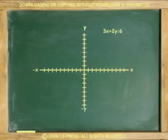One more example, graph the inequality 3x plus 2y is less than or equal to 6. Because the inequality is not in slope-intercept form, we first turn it into slope-intercept form by solving for y.